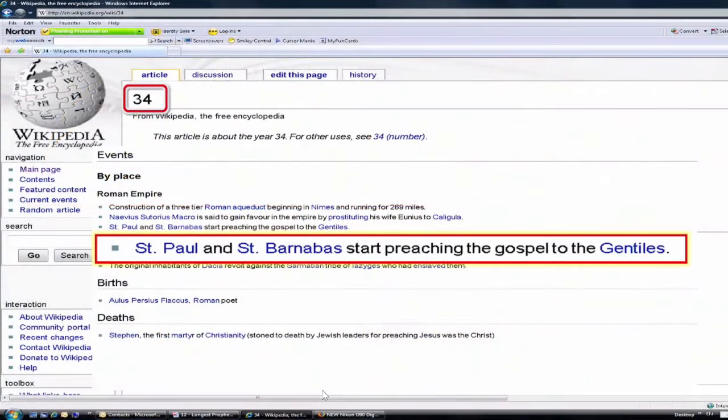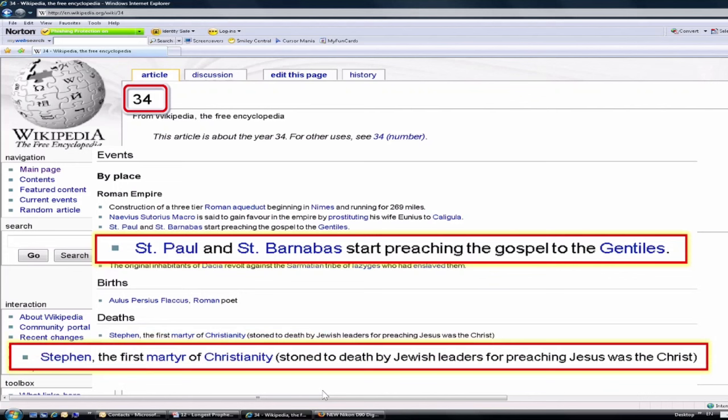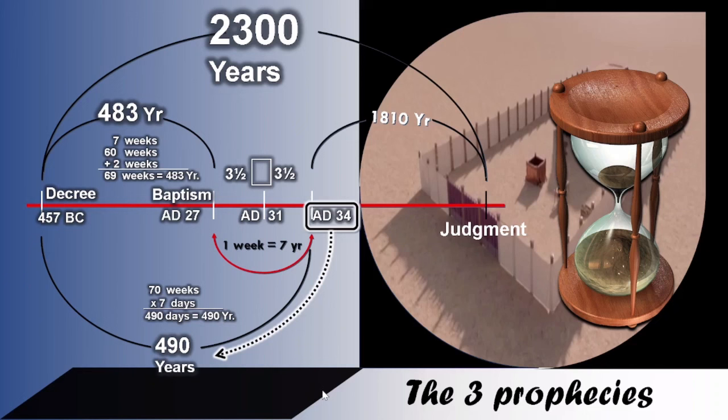And when we continue, we see that in Wikipedia, they tell us Saint Paul and Saint Barnabas start preaching the gospel to the Gentiles in 34 AD. And then Stephen, the first martyr of Christianity, stoned to death by Jewish leaders for preaching Jesus was the Christ. So this was the time which was determined for the Jews and also the city and the gospel to continue as a promise. We see Jesus Christ preaching for the first three and a half years. And then we see the other three and a half years, the apostles preaching, that's from AD 31 to AD 34, preaching within the Jews.